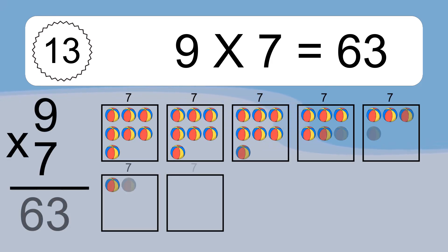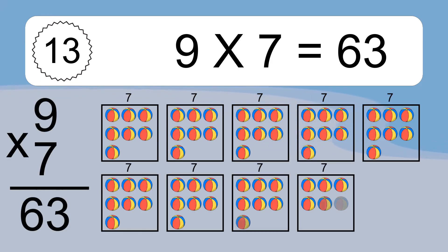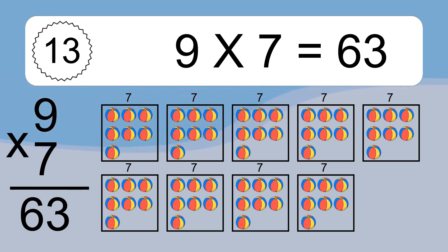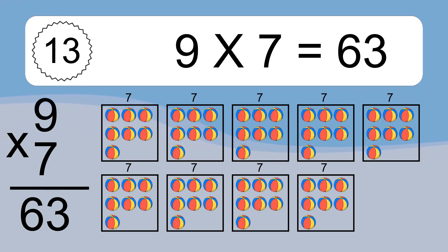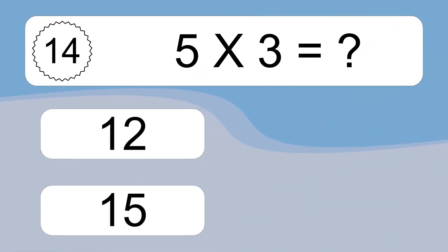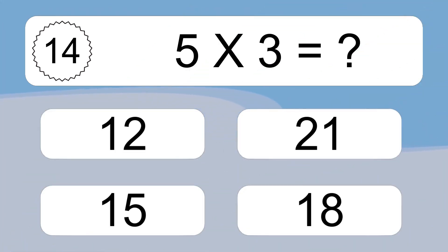9 times 7 equals what? 9 times 7 equals 63. We have 9 boxes, and each box has 7 colorful balls inside. If you count all the balls in all the boxes together, you will have 9 times 7 balls. This equals 63 balls.